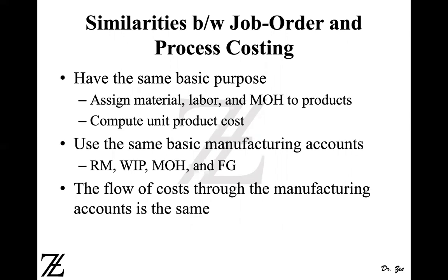They also use the same manufacturing accounts: raw material or material inventory account, work in process account, manufacturing overhead account, finished goods, and cost of goods sold. All the accounts are the same. The only difference is that in a process costing system, you may have multiple work in process accounts and multiple manufacturing overhead accounts as well.